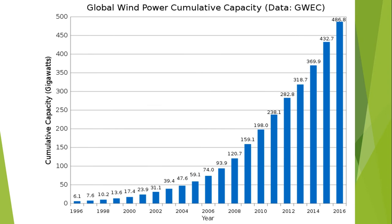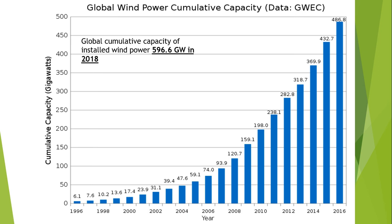This is the graph of global wind power cumulative capacity from 1996 to 2016. Dedicated research has proved that windmills can produce an enormous amount of energy. The cumulative capacity is in gigawatts, and from 1996 to 2016 the graph indicates an exponential growth.